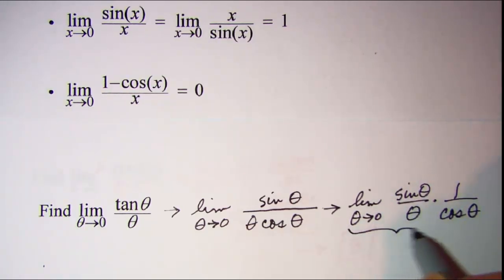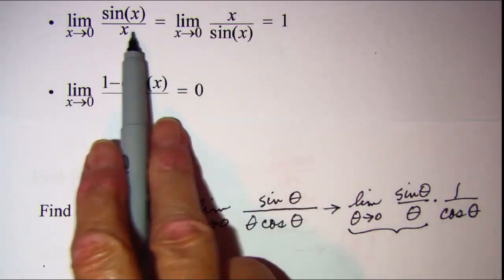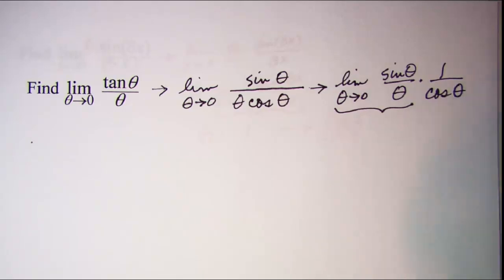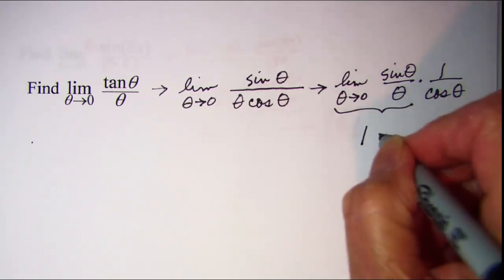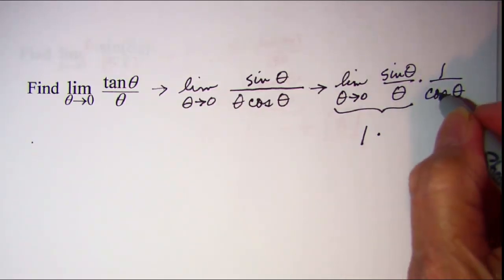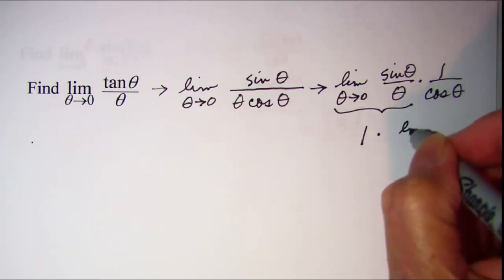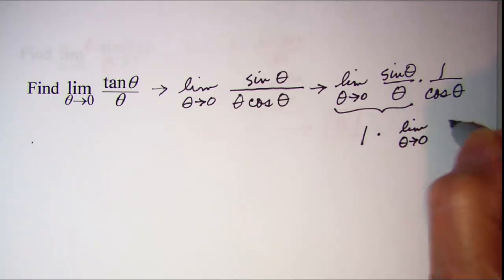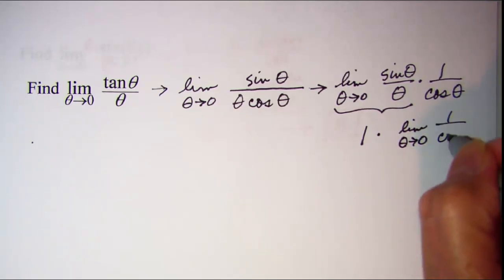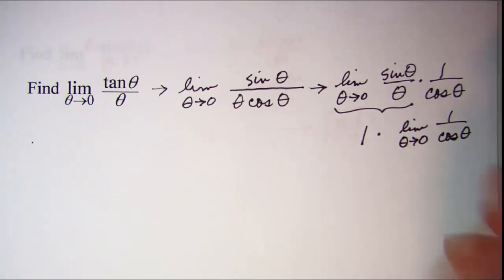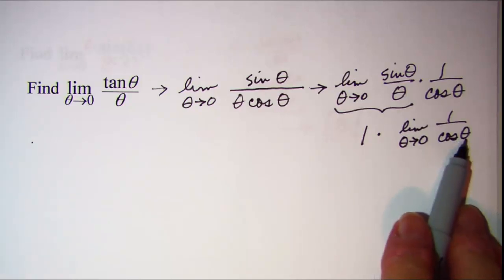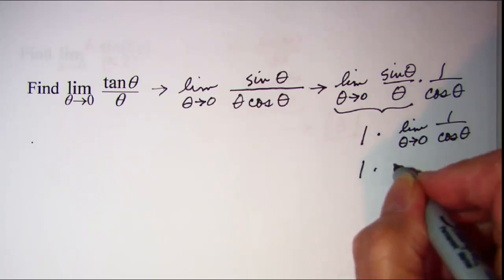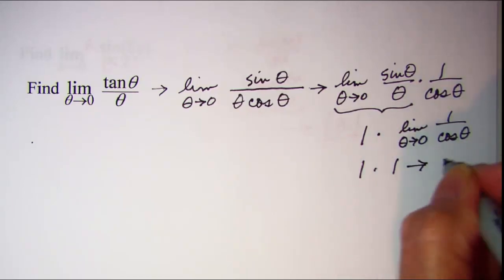We know that cosine of 0 is 1, so the first part — the limit of sine theta over theta — is equal to 1. Then the limit as theta approaches 0 of 1 over cosine theta is 1 over 1, which is 1. So I have 1 times 1, which equals 1.